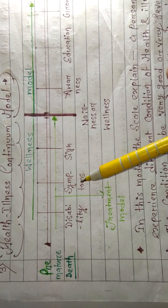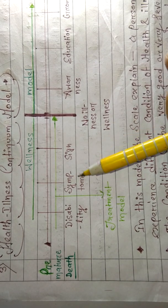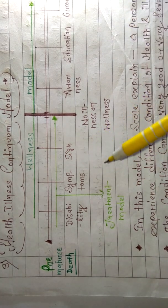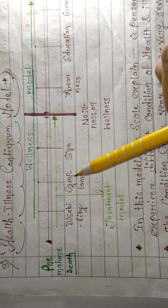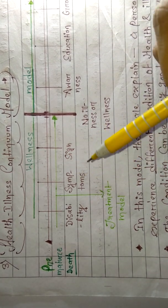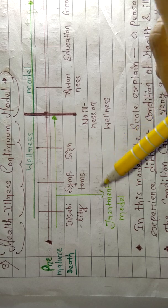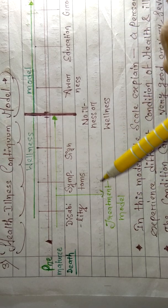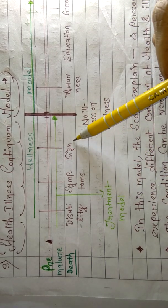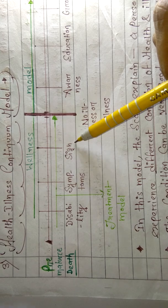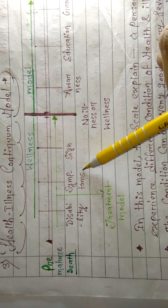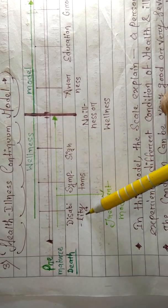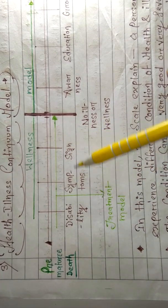A symptom means what a patient feels, but we cannot see it. For example, a patient is having pain — we cannot see the pain, but the patient will tell us they are having severe pain. So what we can see is called a sign, and what the patient tells us is called a symptom.